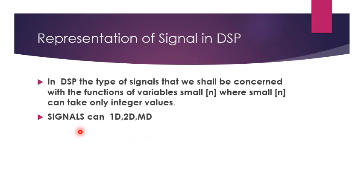Signals can be one-dimensional, two-dimensional, or multi-dimensional. Signals can also be natural — for example, a thunderstorm or lightning — or synthetic, generated in a laboratory for communication purposes. Signals can be either analog or discrete, and it is the discrete signal that we are concerned with in this course.